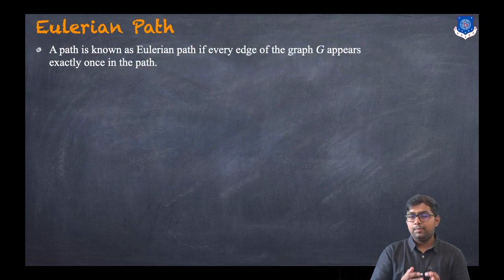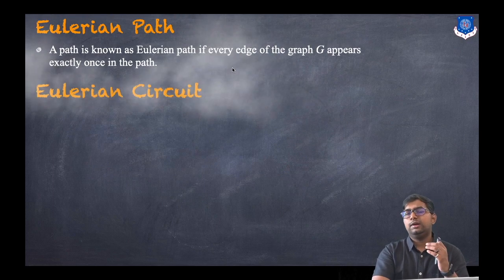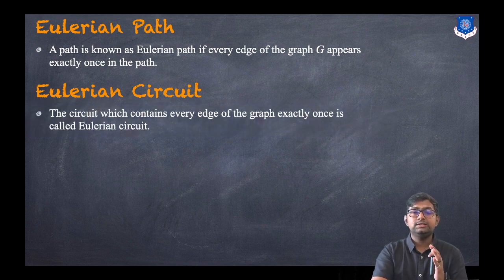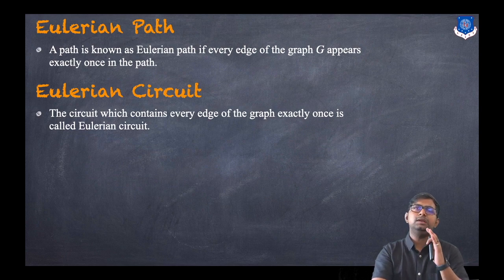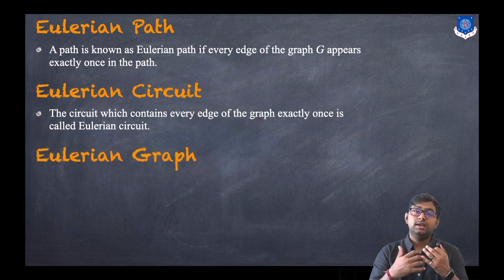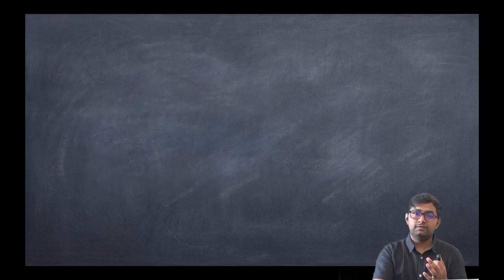A path is known as an Eulerian path if every edge of the graph appears exactly once in the path. A circuit which contains every edge of the graph exactly once is called an Eulerian circuit — each and every edge must appear exactly once. A graph which has an Eulerian circuit is known as an Eulerian graph.